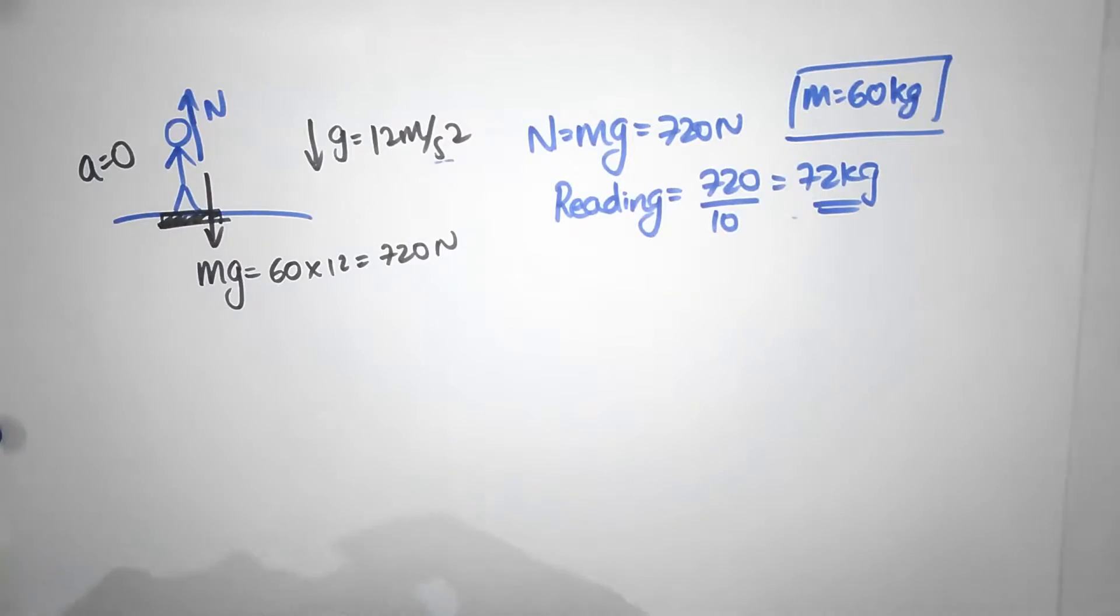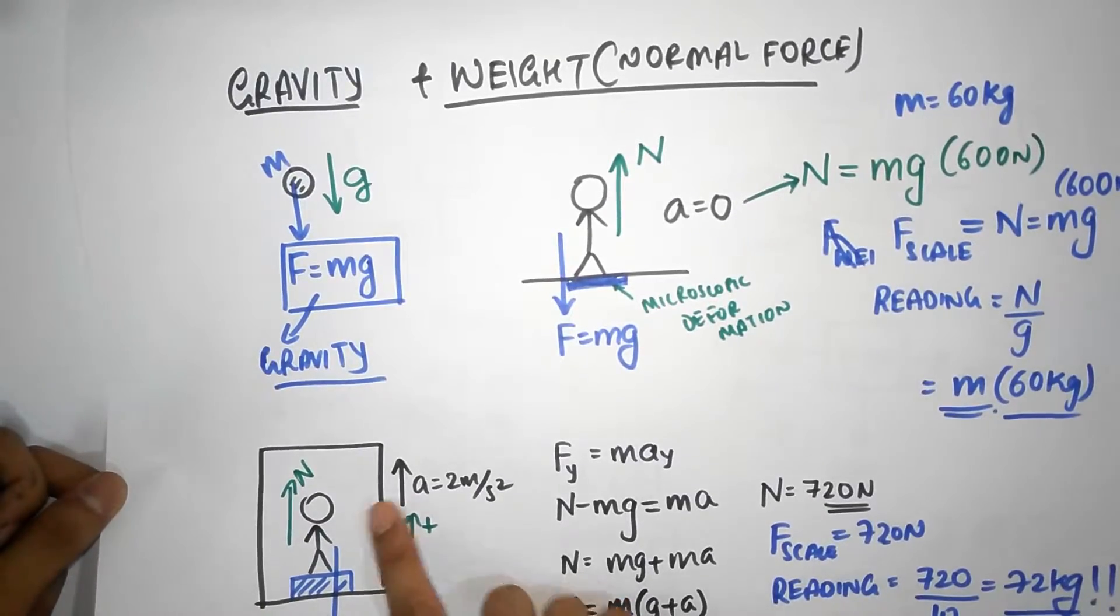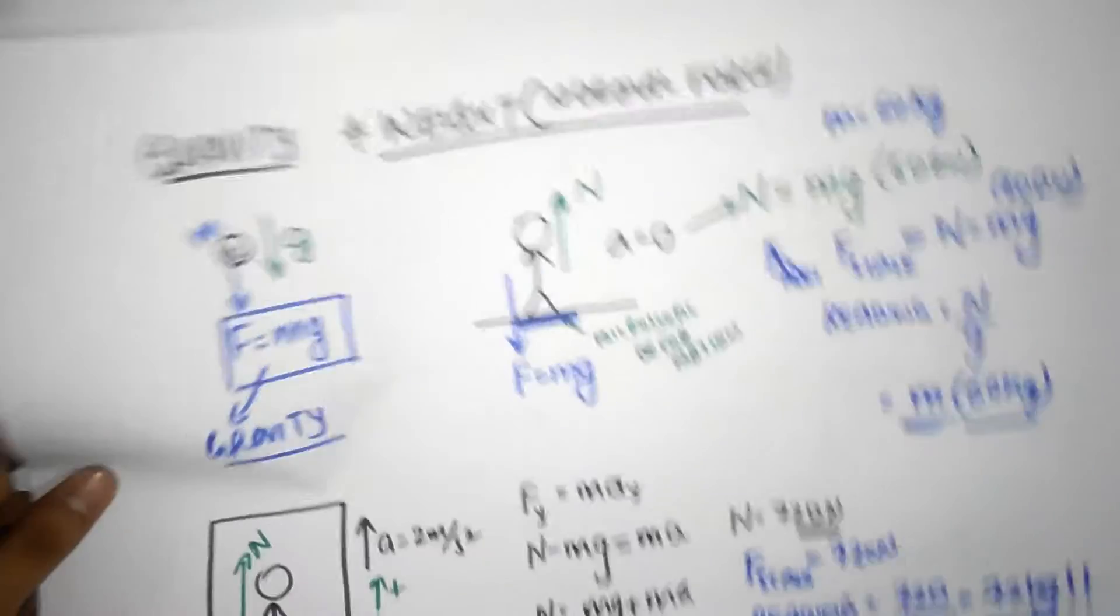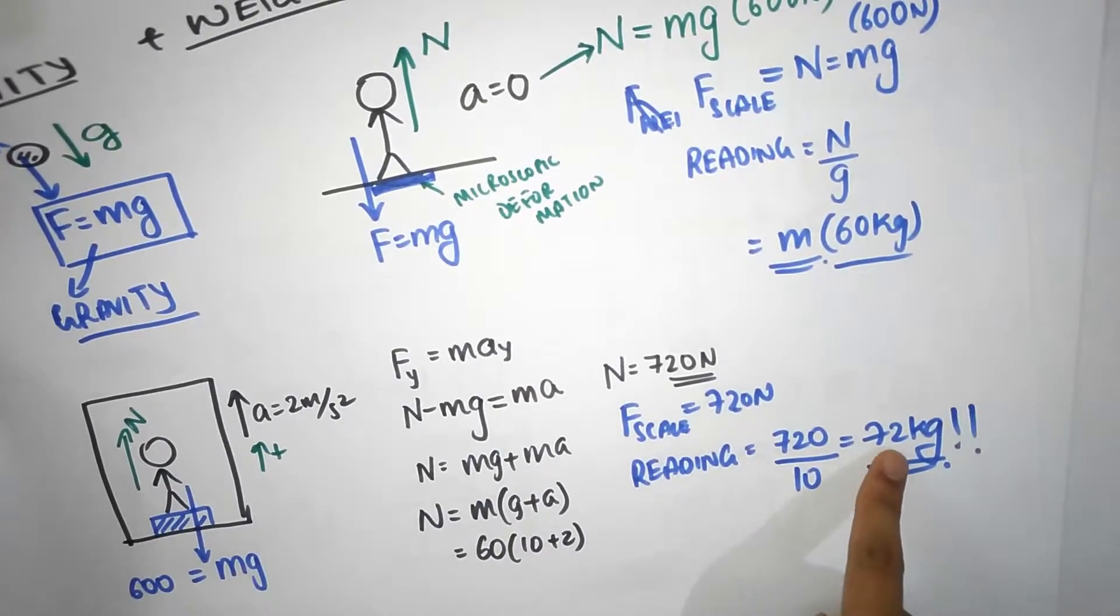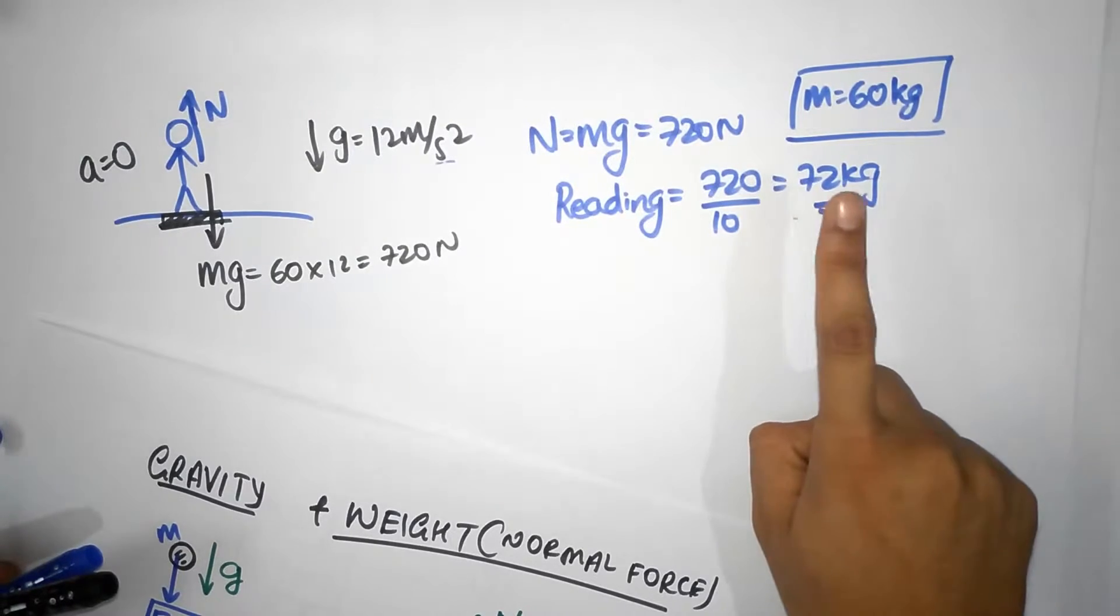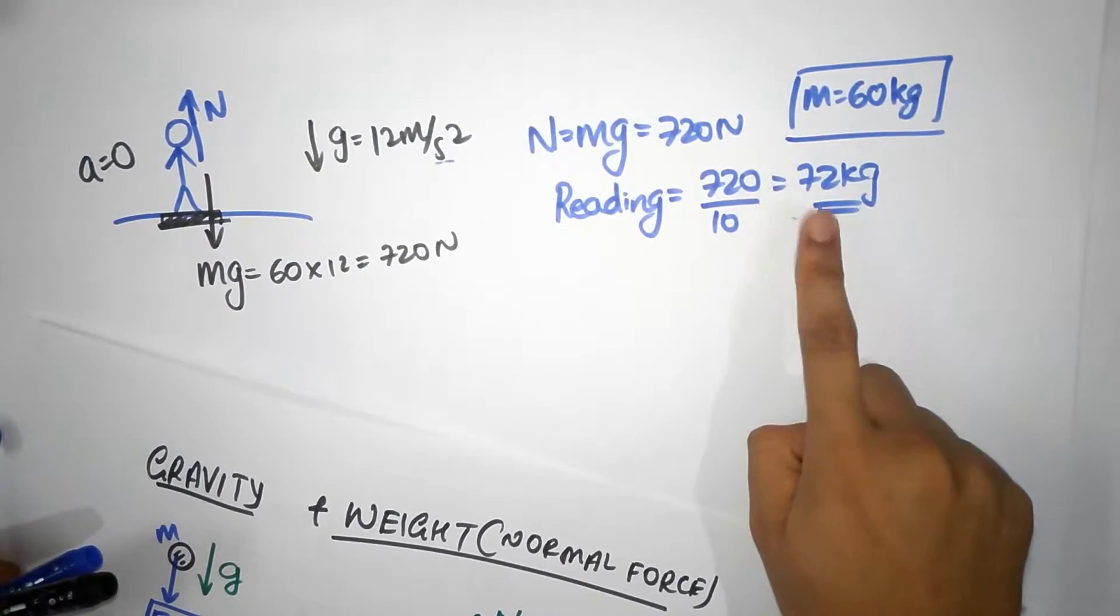And now here comes the kicker. The kicker is there is absolutely no difference between this case where you are in an elevator accelerating upwards on Earth, in which the reading is 72 kilograms, and this case where you are not accelerating but you are standing still on another planet.